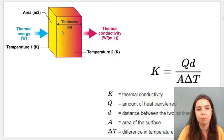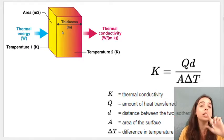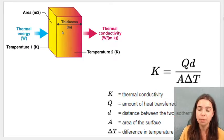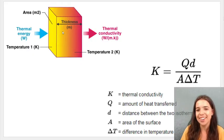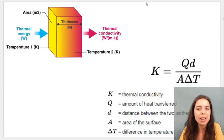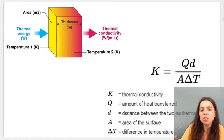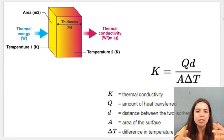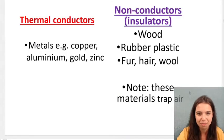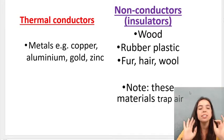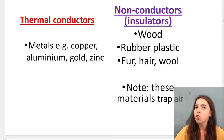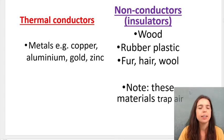There is a formula to calculate thermal conductivity, which you'll encounter in AP Physics or at university level. It depends on variables like the amount of heat transferred, the area, and the temperature difference between the two sides of the material. Thermal conductors include metals, while non-conductors, also called insulators, include wood, rubber, and plastic — that's why metal pots often have handles made of non-conducting materials.